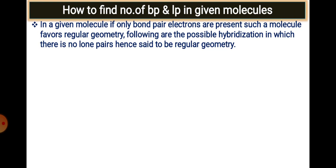There is a simple technique to quickly identify the hybridization and shape of a given molecule. You must know all the rules. In a molecule where only bond pairs are present with no lone pairs, the molecule always has a regular geometry with equal bond angles. These hybridizations with no lone pairs give regular structures.